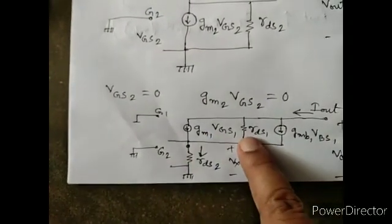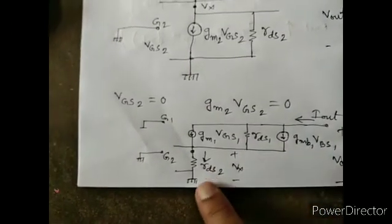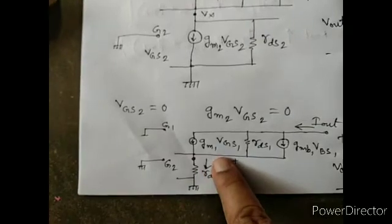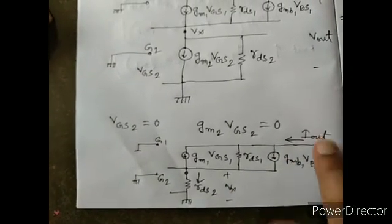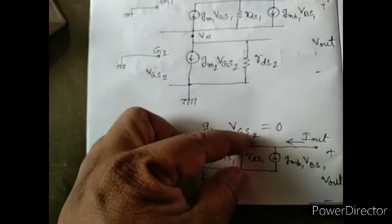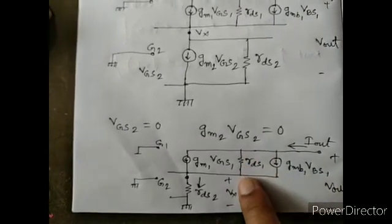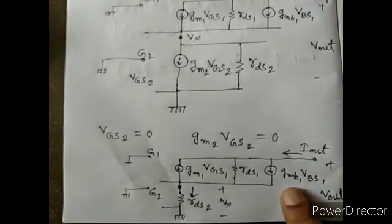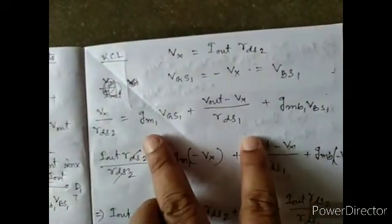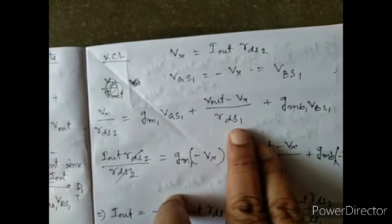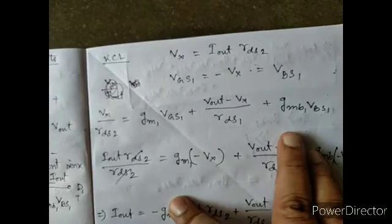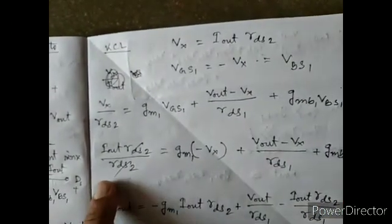The total Iout is the summation of the currents: VX/RDS1 plus gm1·Vgs1 plus (Vout minus VX)/RDS1, which is the current through rds1, plus Gmb1·Vbs1. So we have: gm1·Vgs1 plus (Vout minus VX)/RDS1 plus Gmb1·Vbs1.